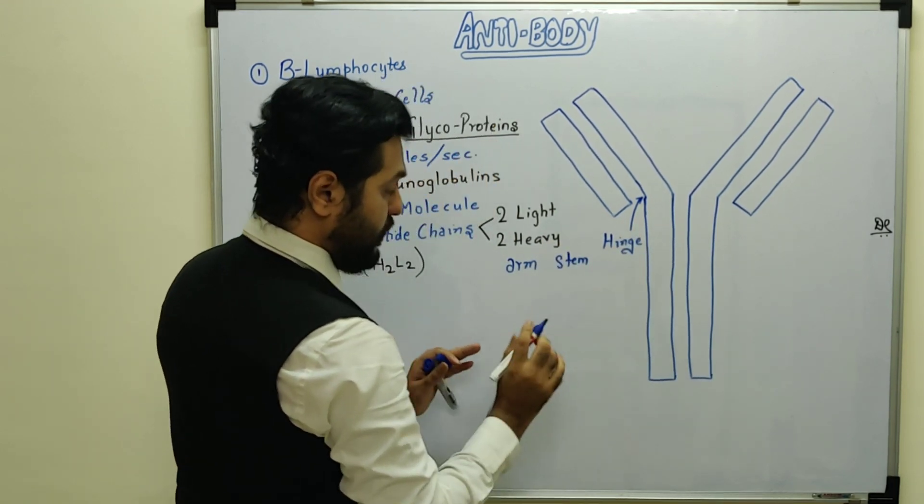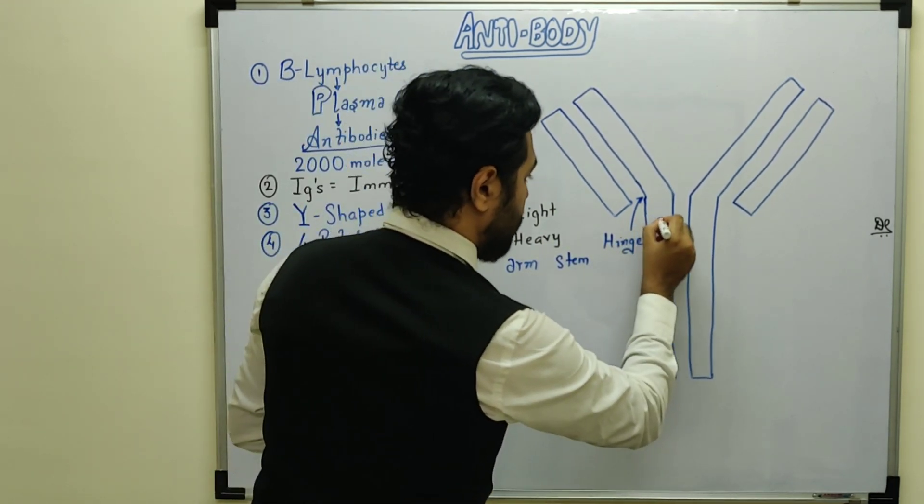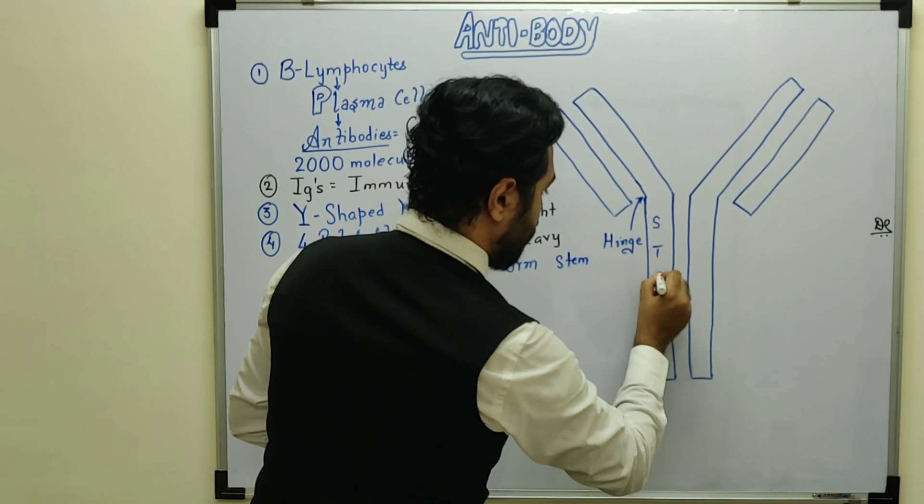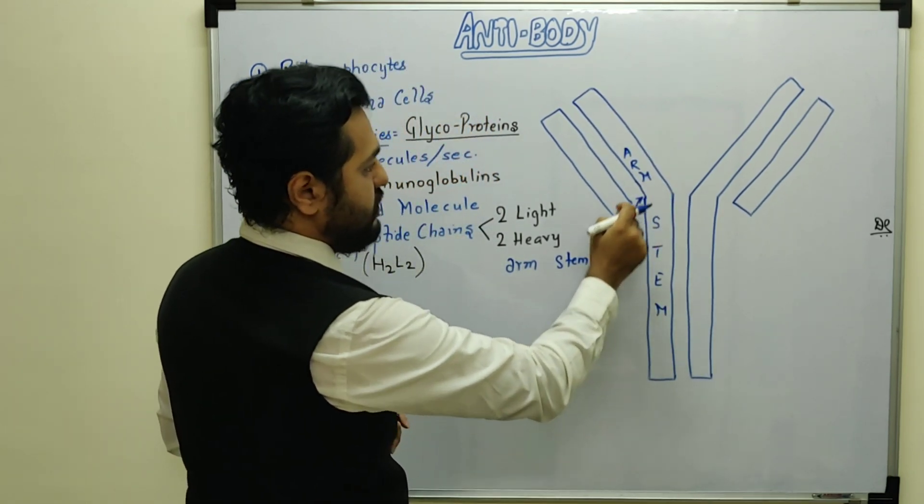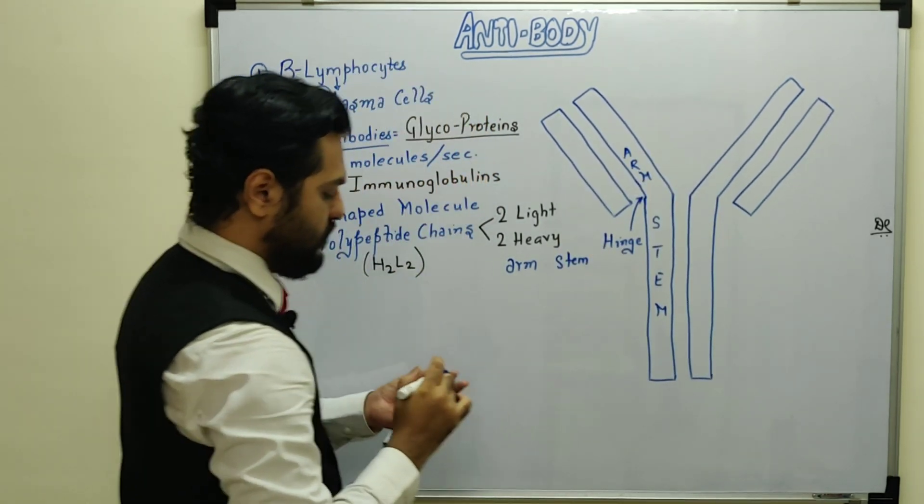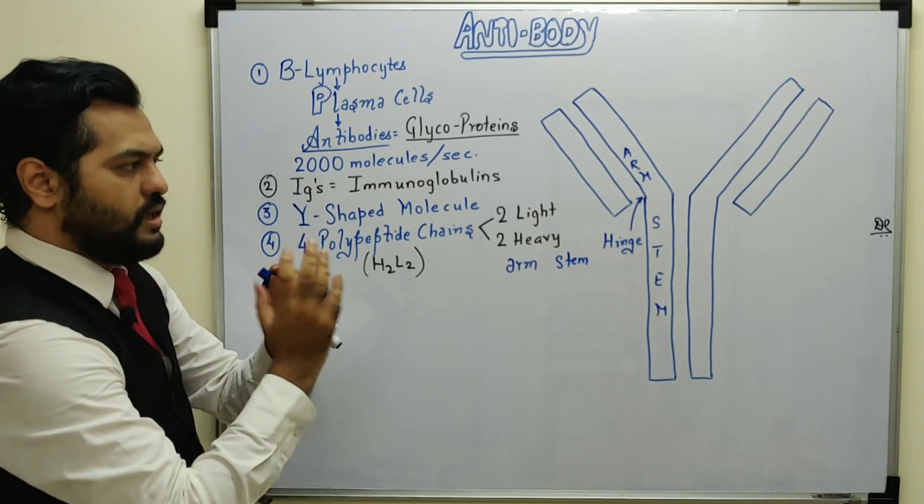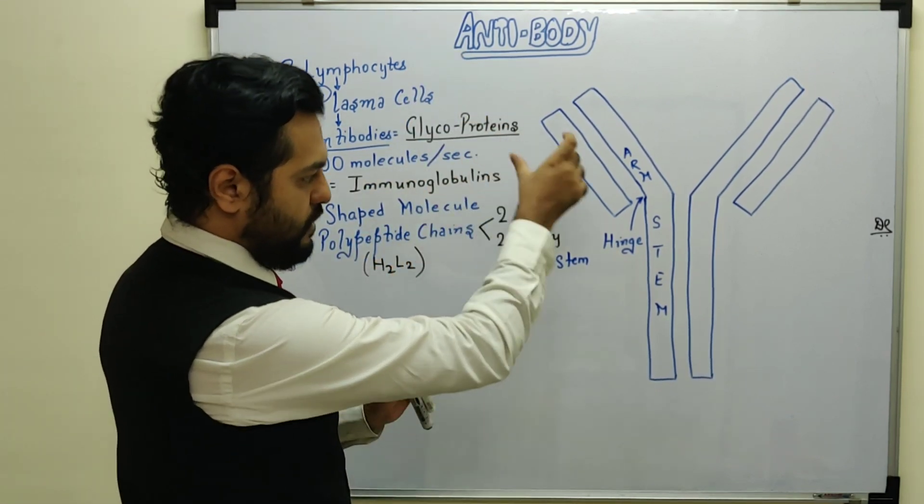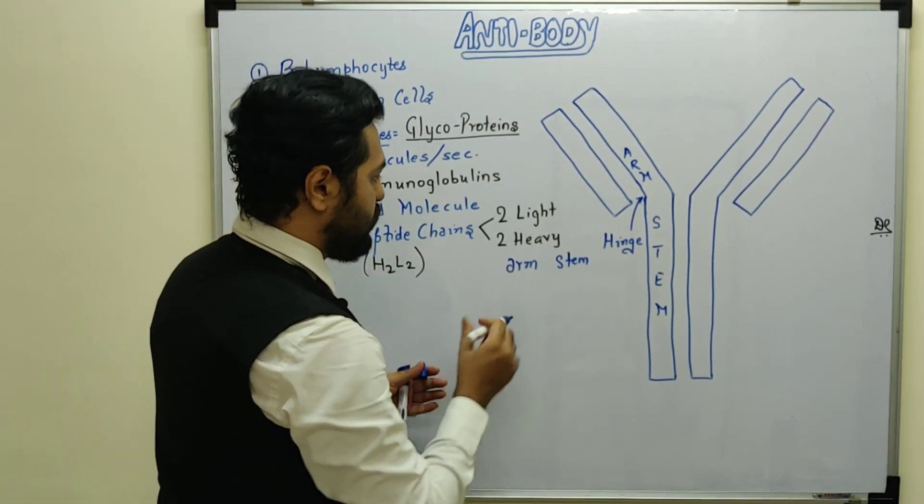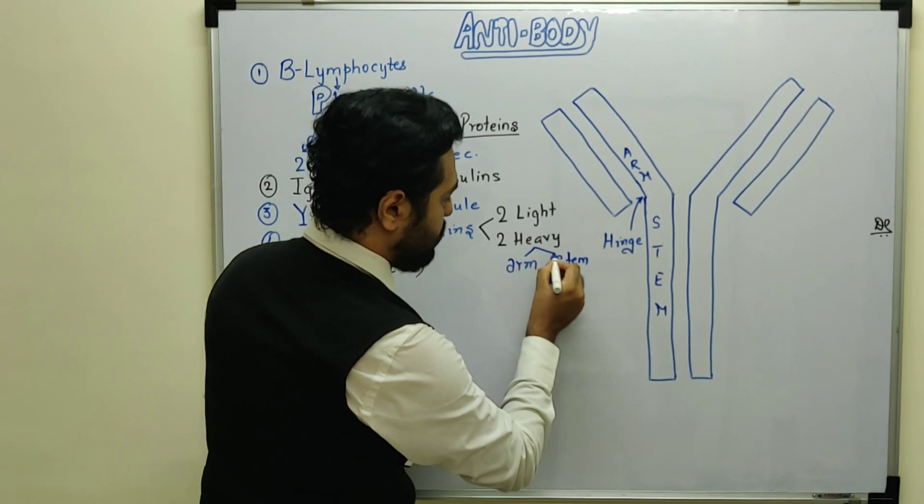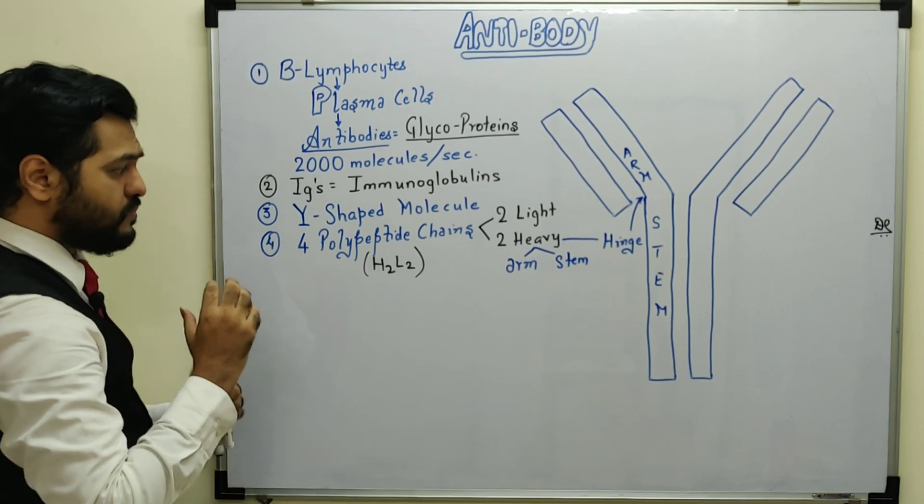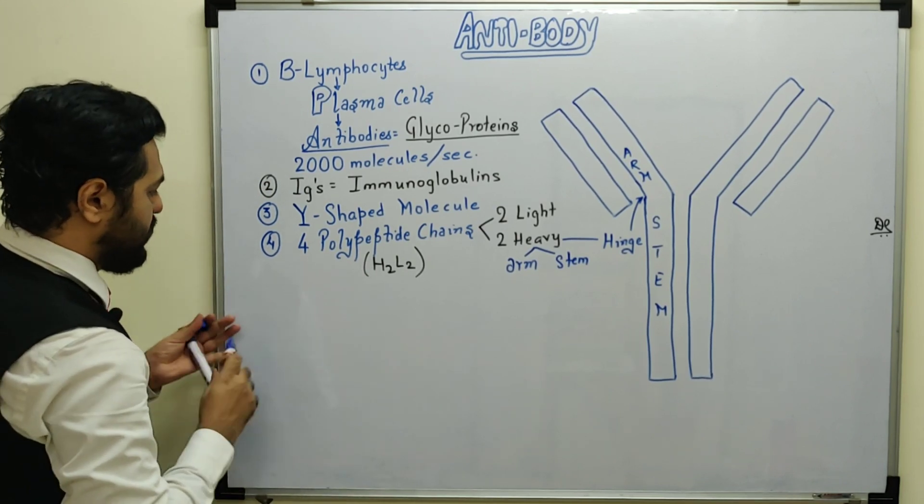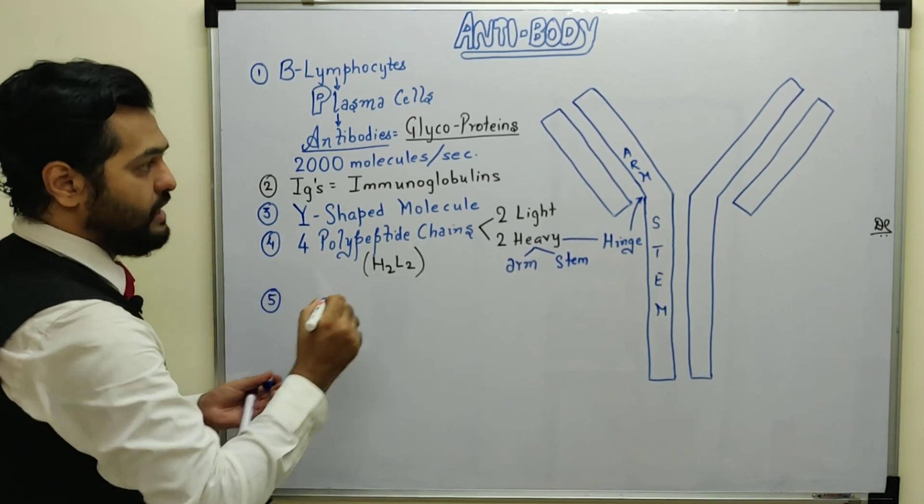I repeat again, this part is the stem and the arm is connected to the stem at the hinge. This hinge joins the stem and arm of the heavy chain.